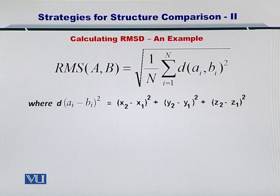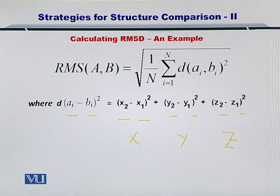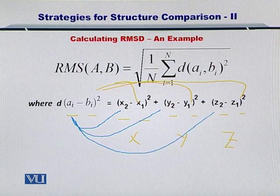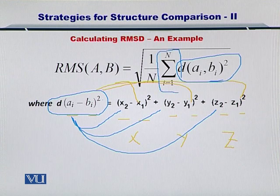You can simply compute the distance using this formula, wherein A_i and B_i are represented by x, where x2 and x1 are for x, y2 and y1 for y, and z2 and z1 for z. So B has x1, y1 and z1 coming from the PDB, while A has x2, y2 and z2 coming from the PDB. Using this formula, you can compute the distance and plug it into the equation, summing all such distances for N alpha carbons, dividing by N, and then taking a square root.